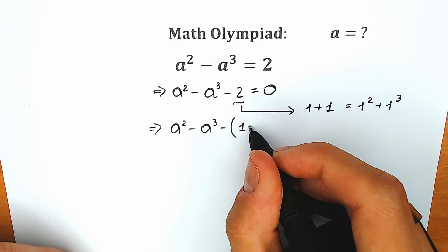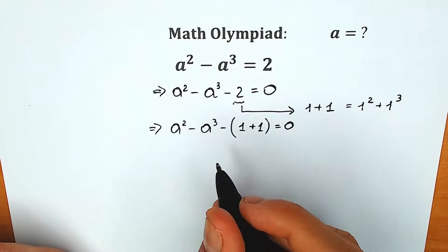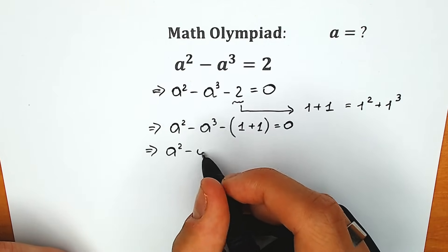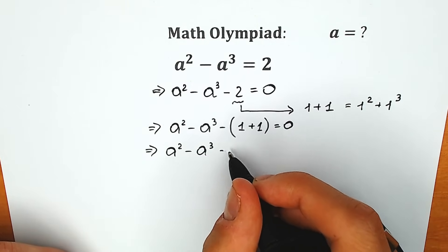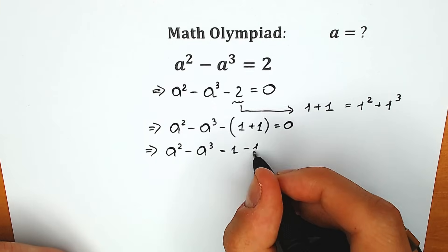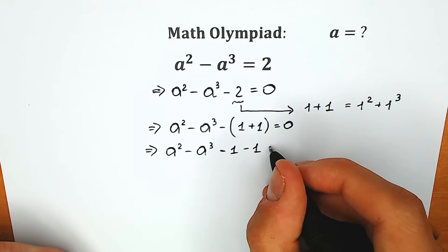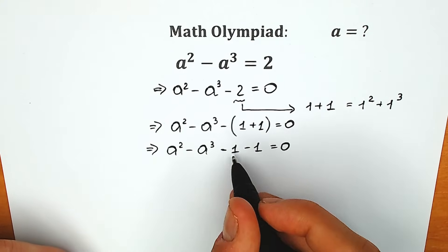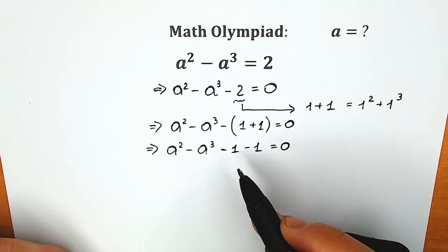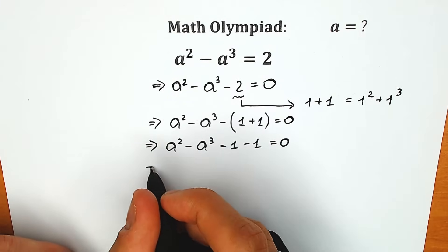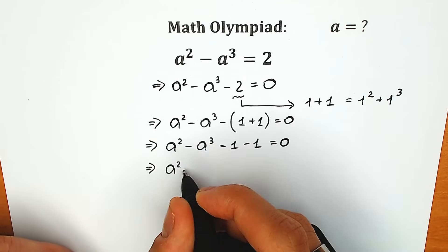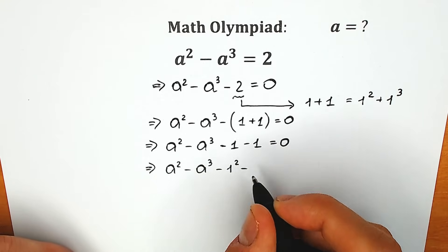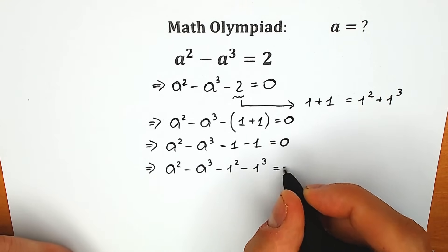Now let's open our parenthesis. So as a result we have a squared minus a cubed, and we have minus 1 and minus 1, equal to zero. Right now instead of this 1 we're going to write 1 squared, and instead of this 1 we're going to write 1 cubed. So we have a squared minus a cubed minus 1 squared minus 1 cubed, equal to zero.